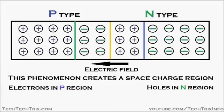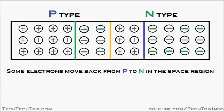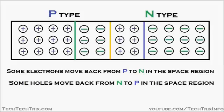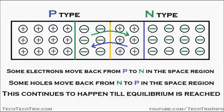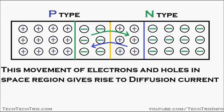The direction of the electric field is from the N-type region towards the P-type region. Some electrons move back from P to N in this space charge region, and some holes move back from N to P. This continues until an equilibrium is reached. This movement of electrons and holes in the space charge region gives rise to a current called diffusion current.